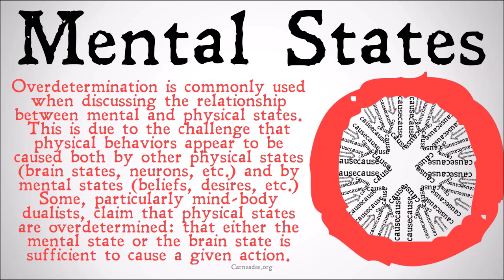Over-determination is commonly used when discussing the relationship between mental and physical states. Physical behaviors appear to be caused both by our physical states — our brain states, our neurons — and by mental states. What is the reason you are holding that cup? Because neurons are firing in my brain telling my muscles to tighten, but also because it has water in it and I want to drink it. Some, particularly mind-body dualists, often claim that physical states are over-determined — that either the mental state or the physical state is sufficient to cause a given action.